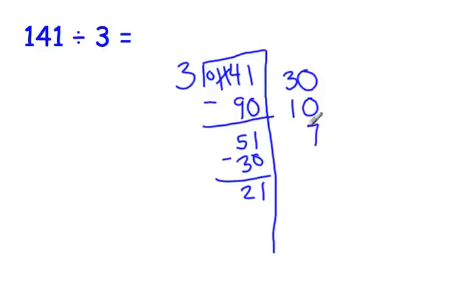Now we think about how many groups of 3 will get us close to 21. We know that 7 times 3 is 21. So, take out our 21, which is our 7 groups of 3. And that brings us down to 0. We have successfully taken our 141 and gotten it down to 0 by taking out groups of 3.